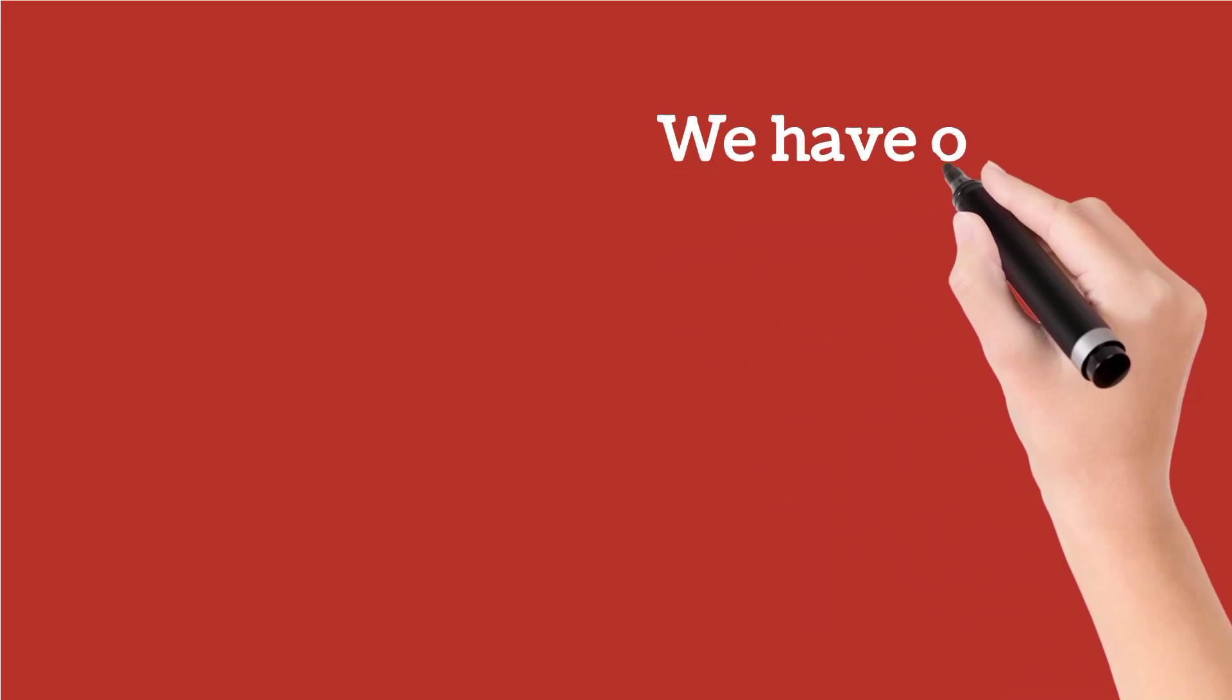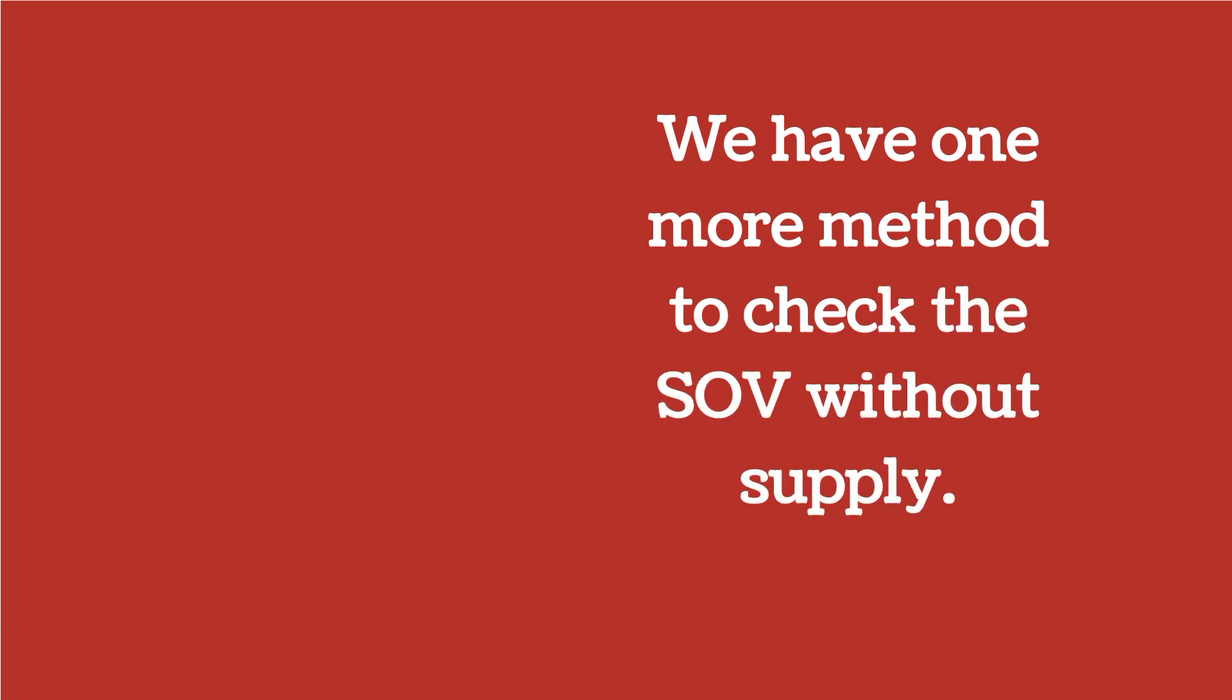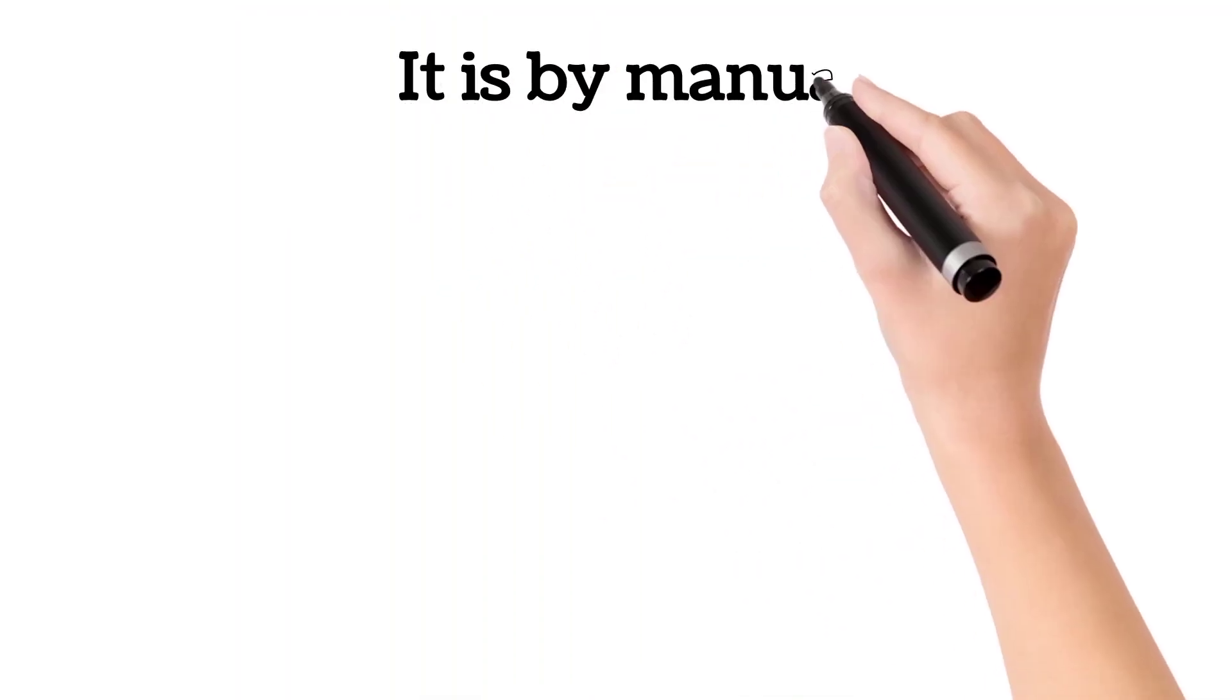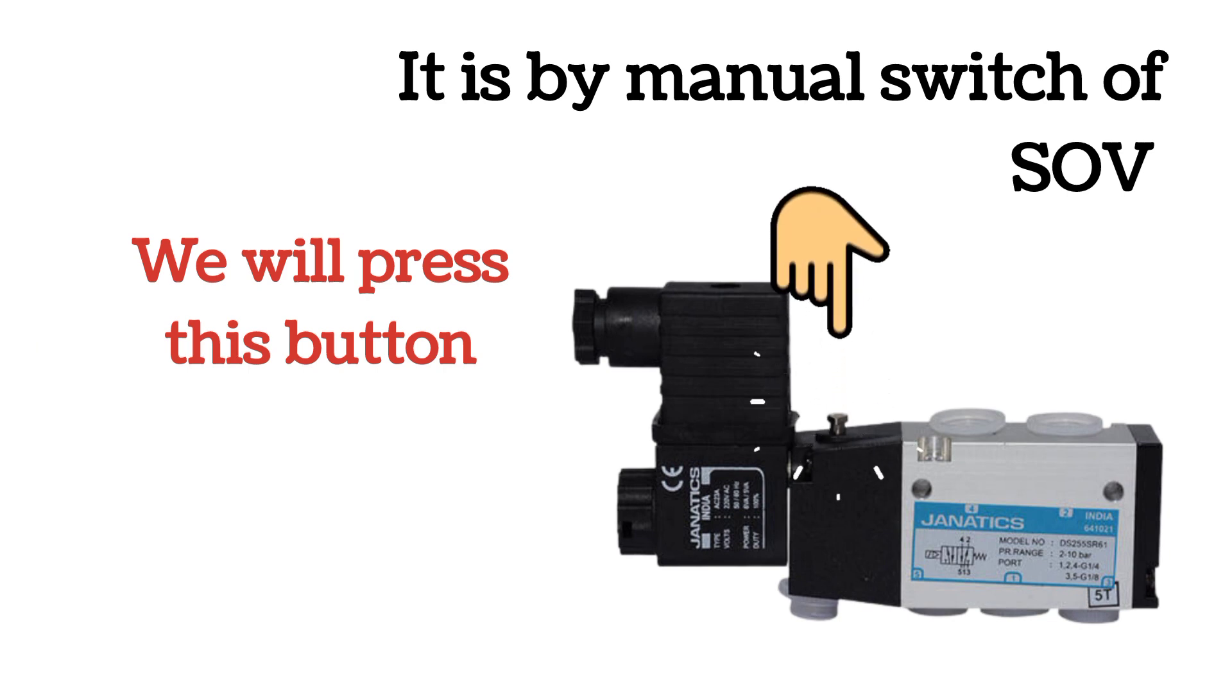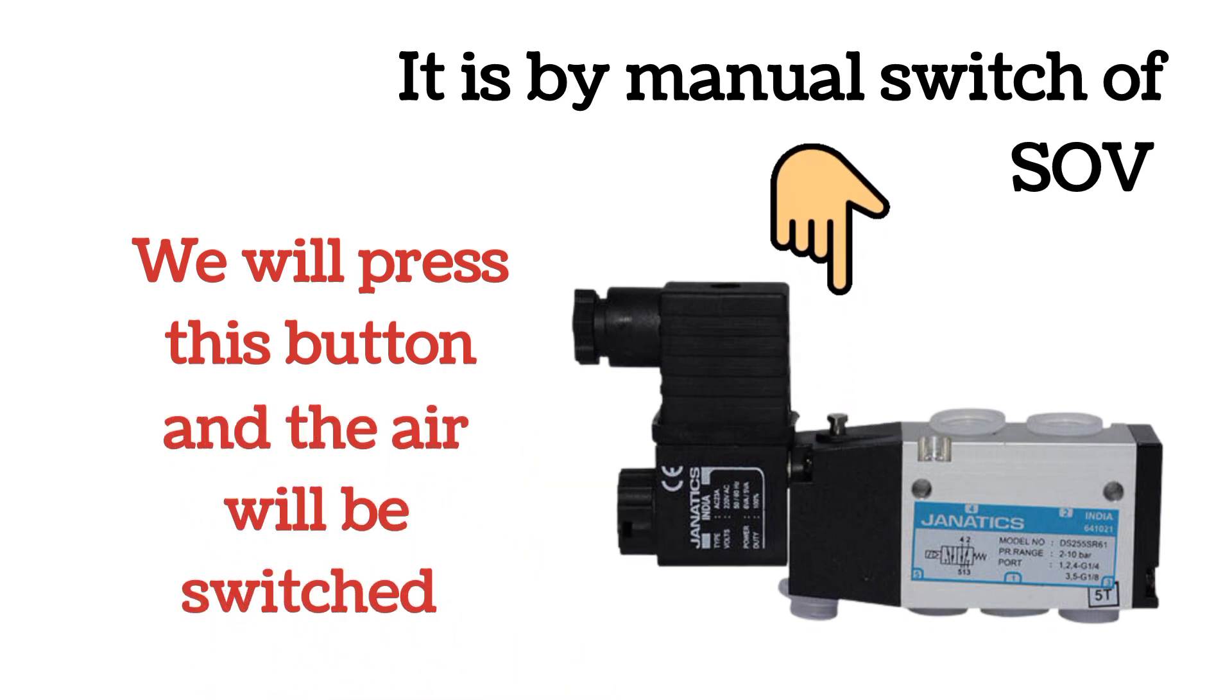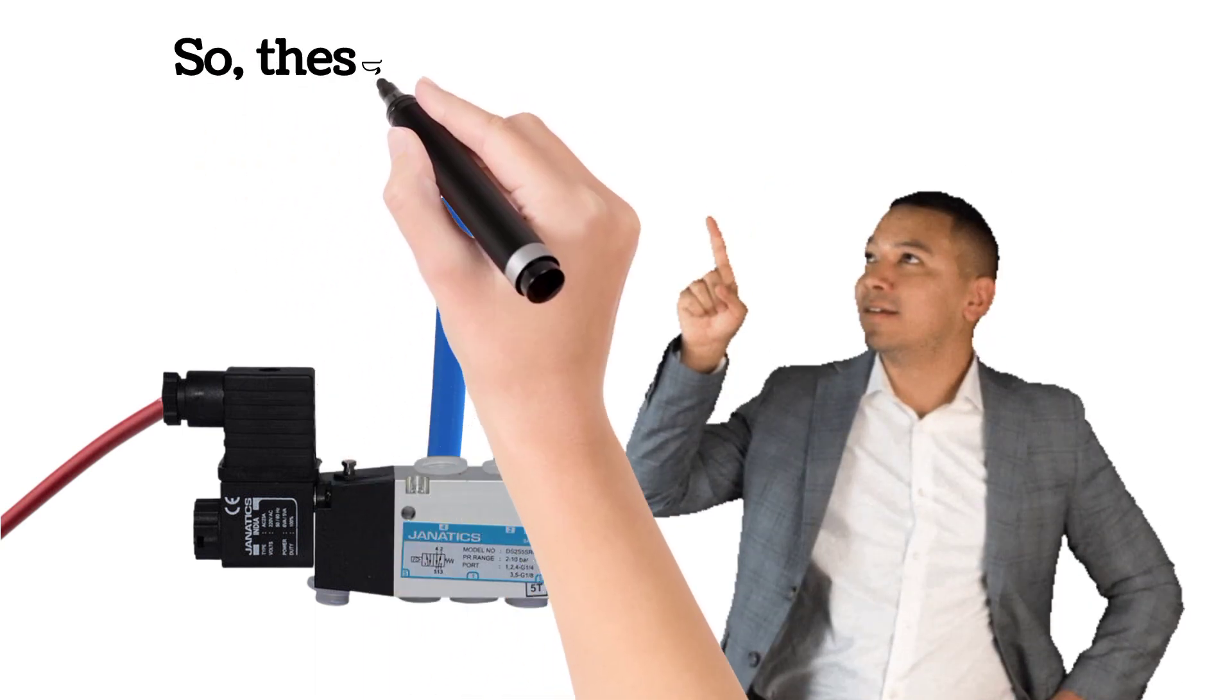We have one more method to check the SOV without supply. Let's see what is the method. It is by manual switch of SOV. We will press this button and the air will be switched. So, these methods are also for others to show that SOV is working.